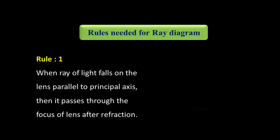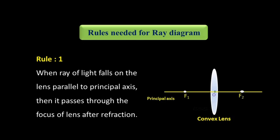Some rules have to be followed. Rule number one: when a ray of light falls on the lens parallel to the principal axis, then it passes through the focus of the lens after refraction. The incident ray is parallel to the principal axis; after refraction, it passes through the focus F2. This is the first rule.